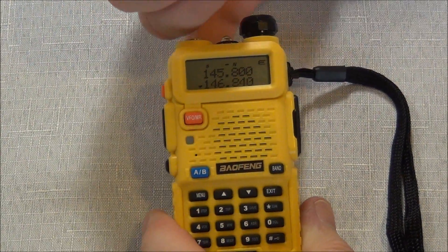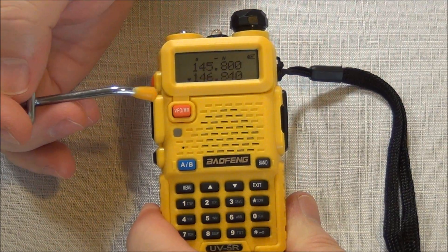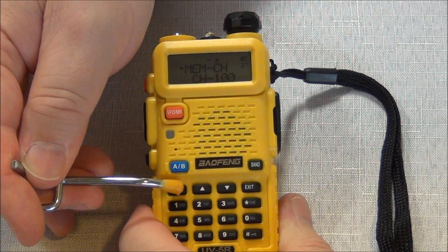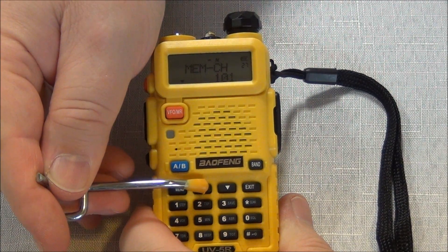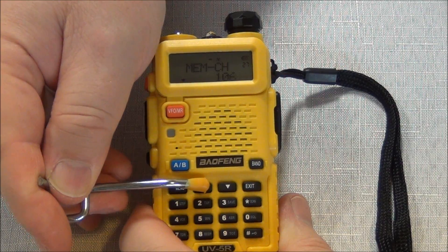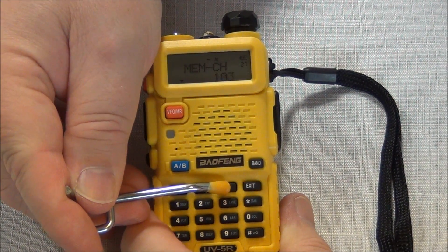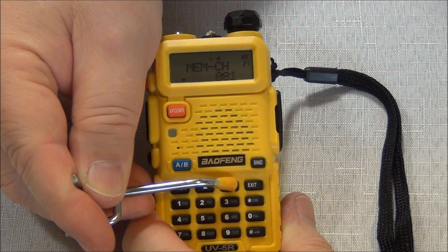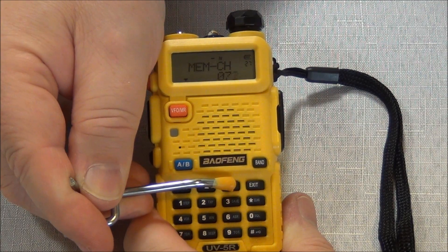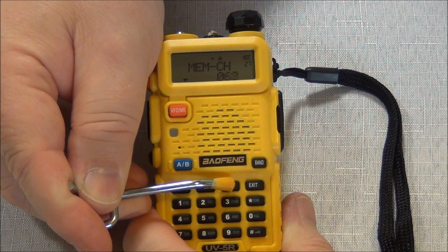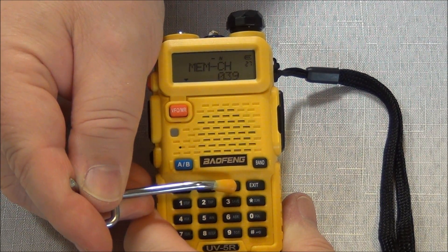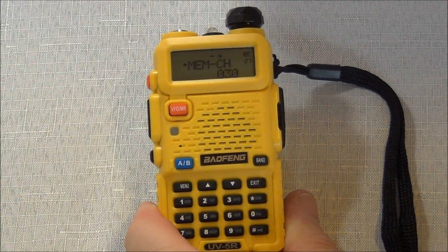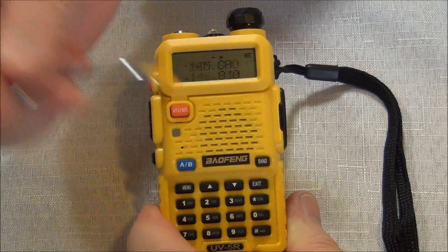So now we have to program the memory channel. The memory channel is going to be number 27, just the next one up. Menu, up to 27, memory channel. I hit menu. That gives me the option to change the memory channel. What you can see here, these numbers that scroll by, is the channel frequency. This radio has 128 memory channels. I want this repeater on 30. So I just scroll her down. And menu saves it. And exit.